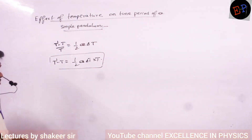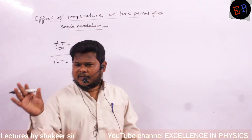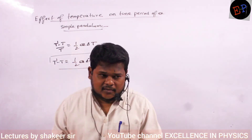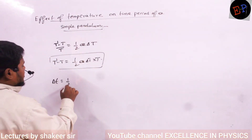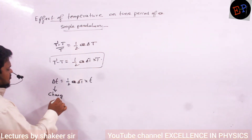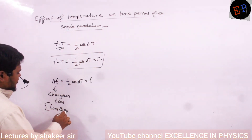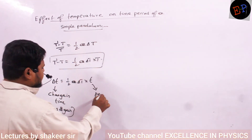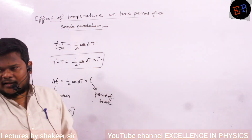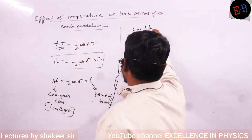This is the general equation: delta T equals half α·∆T multiplied by small t, where small t is the period of time. Delta T is the change in time — it can be loss of time or gain of time. This period of time can be one hour, for example. You can also calculate the change in time for one day, one week, one year.